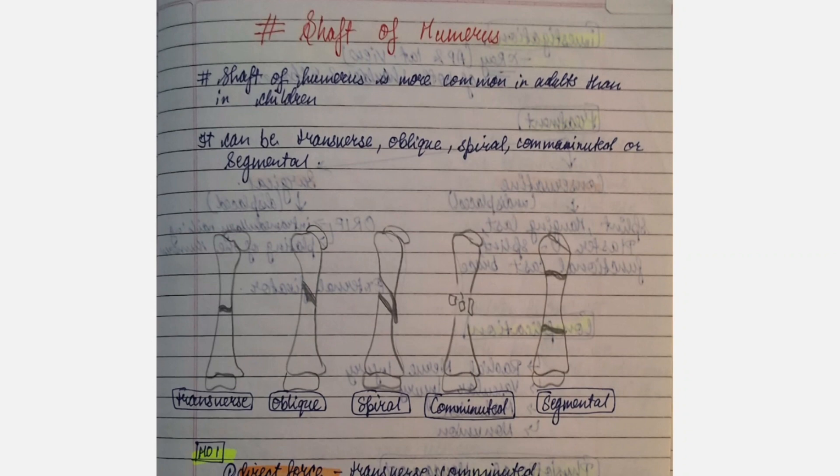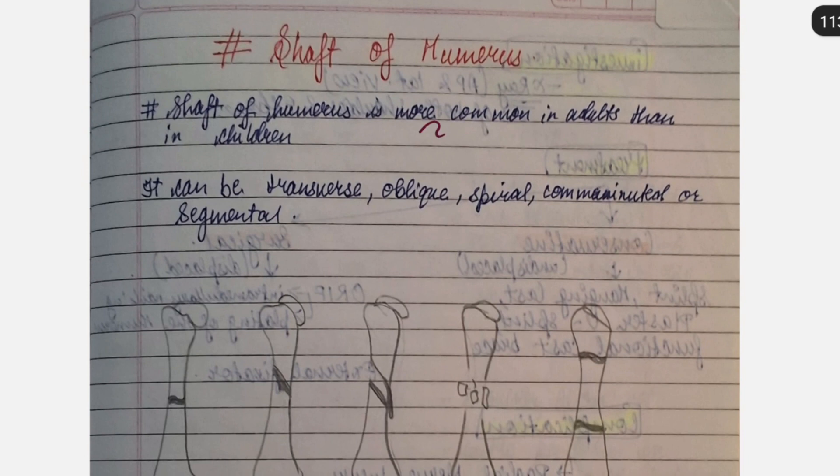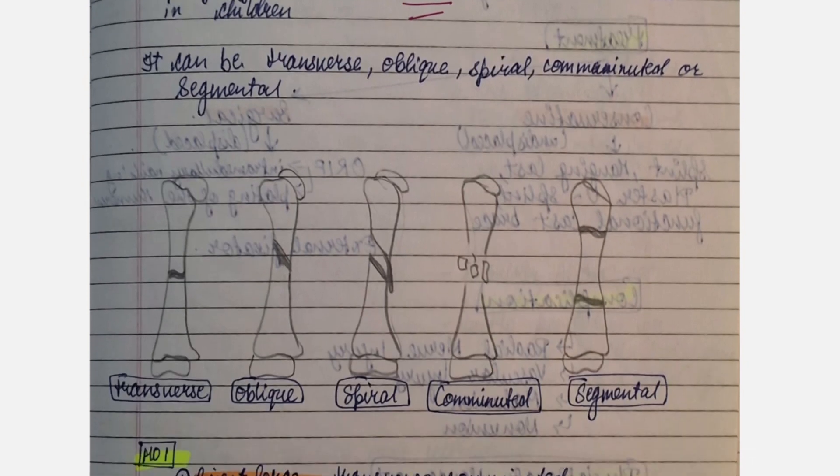It is more common in adults than in children. It can be transverse, oblique, spiral, comminuted, and segmental.